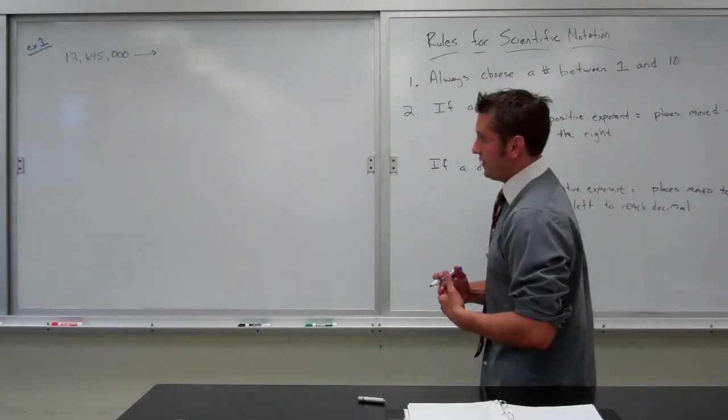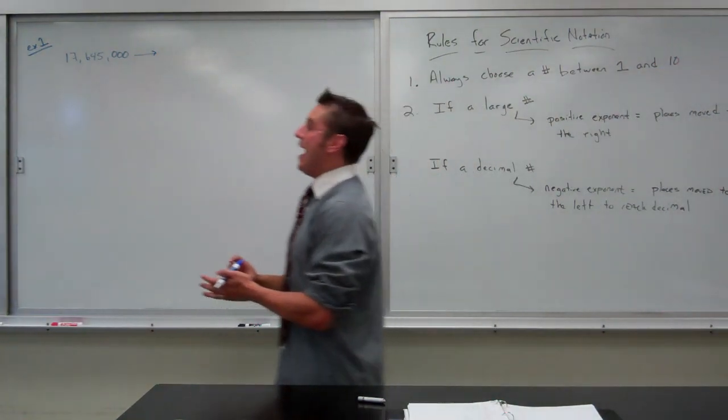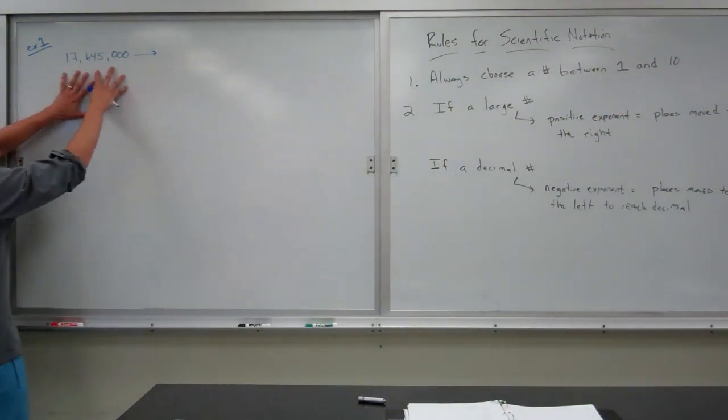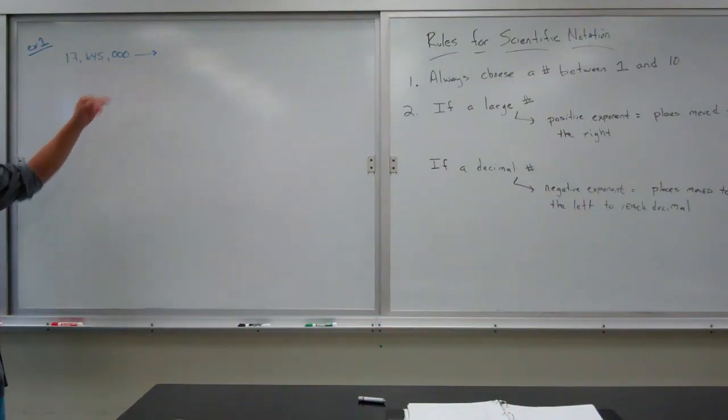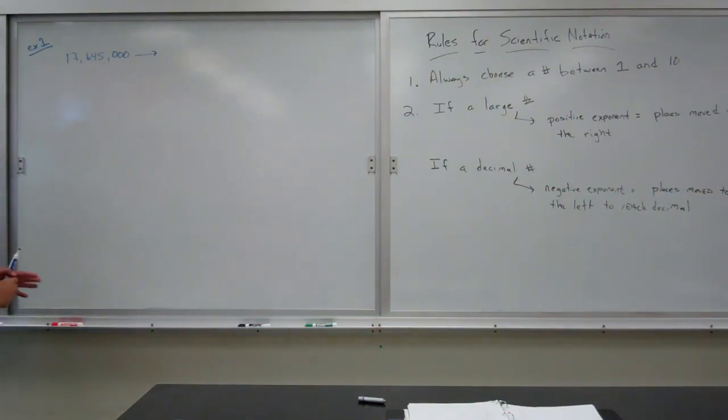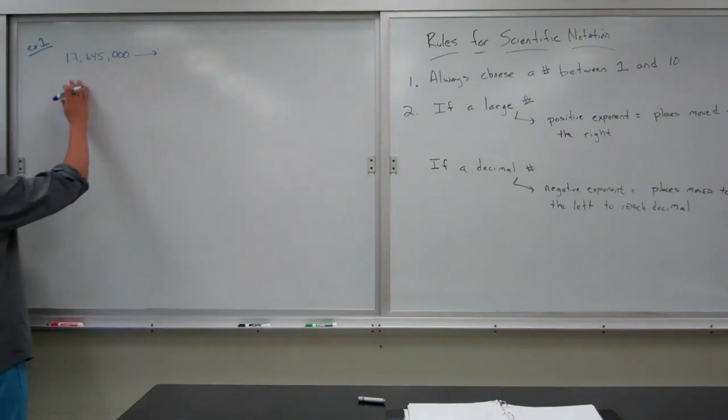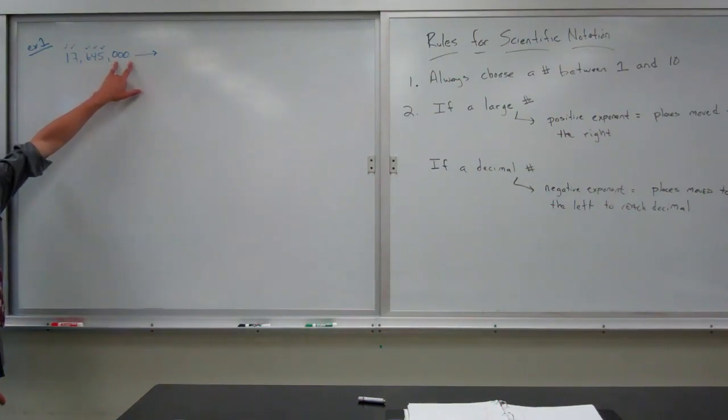The number I choose between 1 and 10 must always match the number of sig figs in this number. So, the number I'm going to choose is 1.7645 or some version of that. How I decide how many sig figs to do is I figure out how many sig figs this number has. Without a decimal point, this number has 1, 2, 3, 4, 5. Because if you remember, with no decimal point, these three zeros do not count.